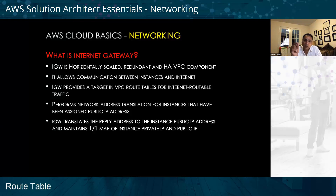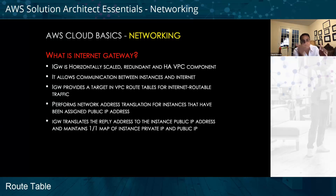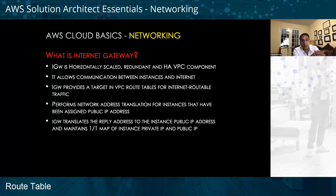The internet gateway provides a target in VPC route tables for internet-routable traffic. It provides a target indicating which machine needs to be accessed when traffic is coming from outside. It always communicates with the routing table in order to help the routing table determine which machine needs to be accessed — whether traffic is coming in from the internet or going out.